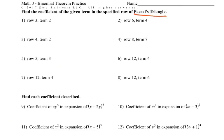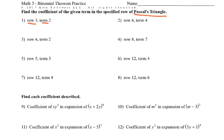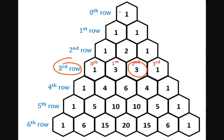So we want row three, term two. I go down to row three, starting at zero, and then term two — so it would be three. Then row six, term four: down to row six, term zero, one, two, three, and four — so it would be fifteen.